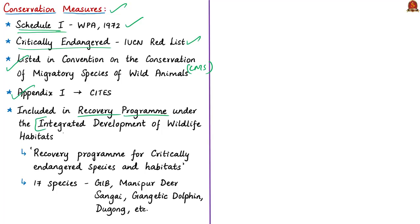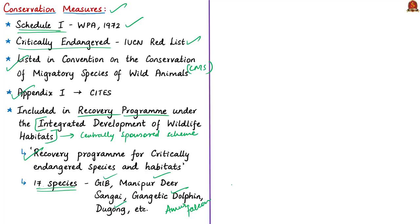The Great Indian Bustard has been identified as one of the species for recovery programs under the Integrated Development of Wildlife Habitats, a centrally sponsored scheme of the Ministry of Environment, Forests and Climate Change. Under this program, initially 17 species were identified, including the Great Indian Bustard, Manipur deer, Sungai, Gangetic dolphin, Dugong, Amur falcon, etc. There is no captive population of this bird, as past attempts to breed it in captivity have failed. Therefore, extinction from the wild would mean total extinction of the species.